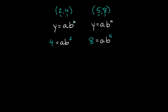So if we want to isolate a, we need to get rid of this b squared, and to do that we need to divide both sides by b squared. The b squareds cancel out on the right side, and we're just left with a. So we get that a is equal to 4 over b squared.